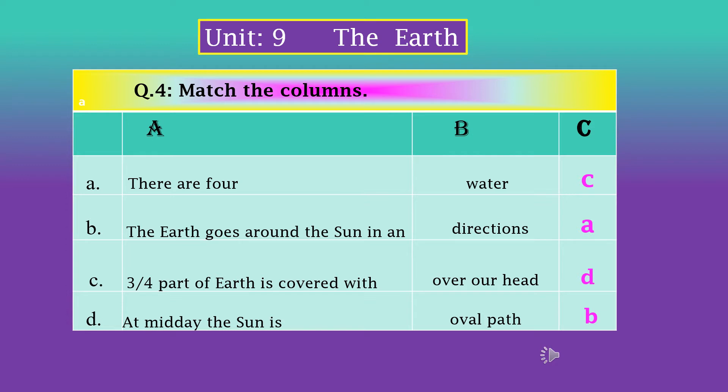You can make the columns like I have made. You have to make four columns and five rows. In the first column, you have to write the letters a, b, c, d.